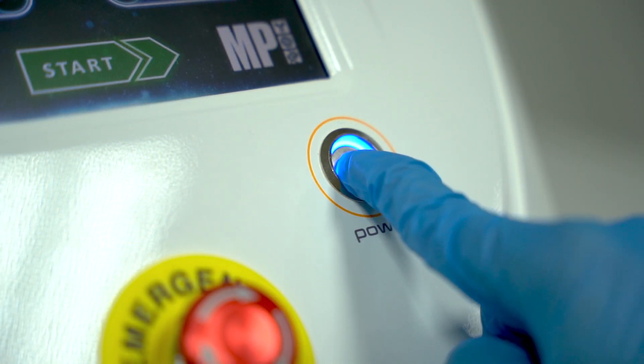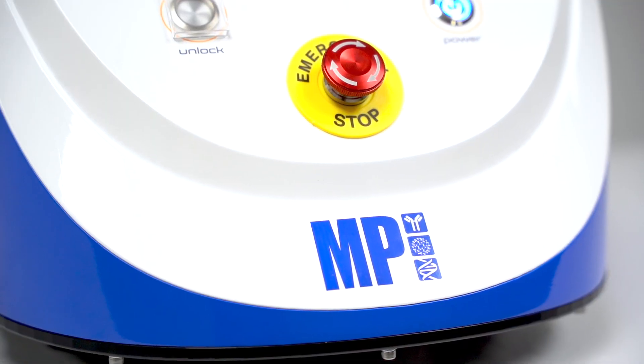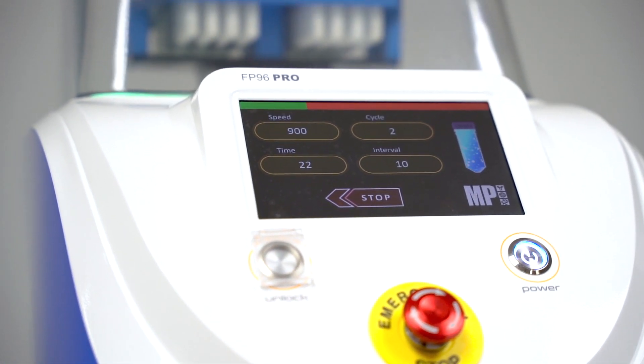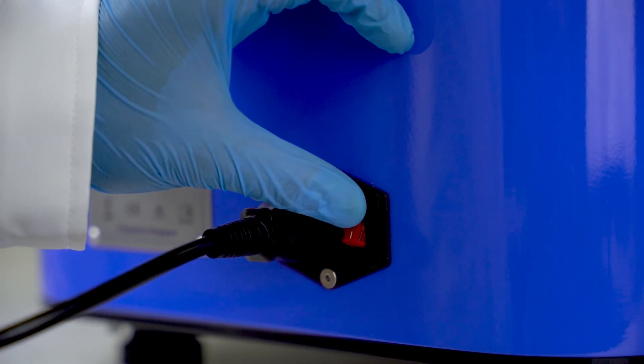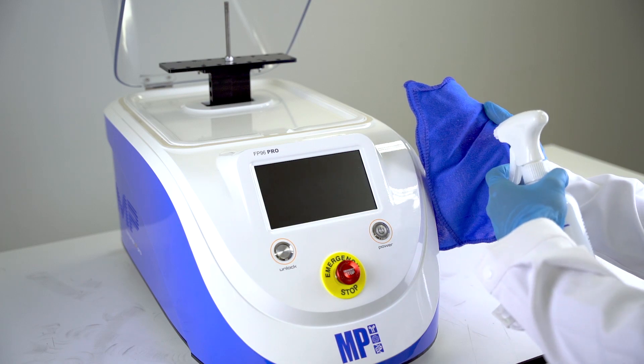Shut down the FastPrep 96 PRO by pressing the power button once your operation is complete. To ensure the machine's long-lasting performance, clean the instrument regularly. Unplug the power cord and wipe the instrument with a soft, damp cloth and a non-corrosive cleaning agent.